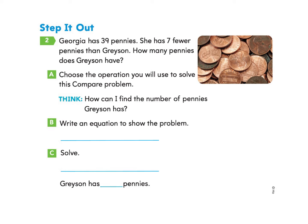Let's take a look at the next page, page 360 under Step It Out number two. Georgia has 39 pennies. She has seven fewer pennies than Grayson. How many pennies does Grayson have?